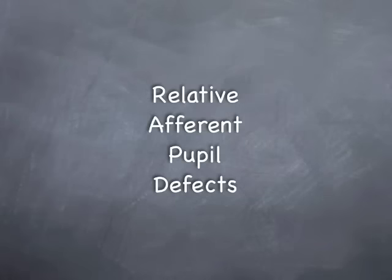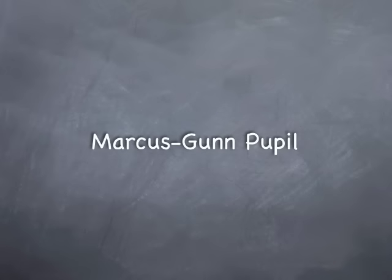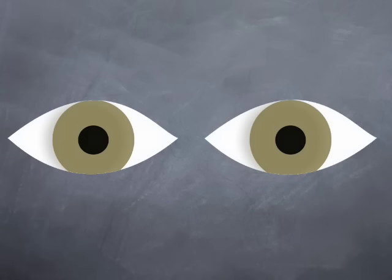Hi, today we're looking at Relative Afferent Pupil Defects or RAPD. This is also sometimes referred to as Marcus Gunn Pupil. First, we will compare its clinical appearance with that of normal pupils and also that of a complete afferent pupil defect.